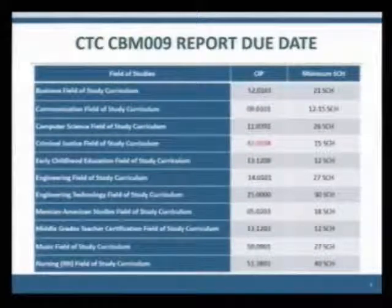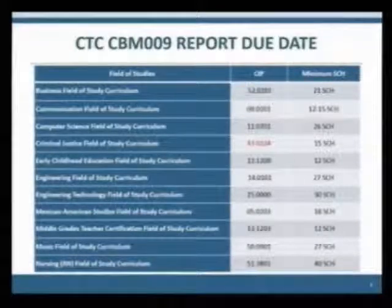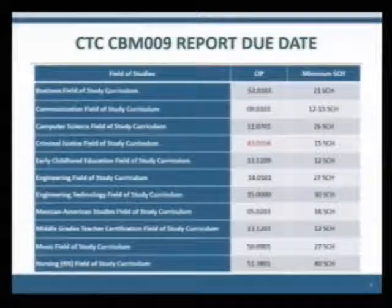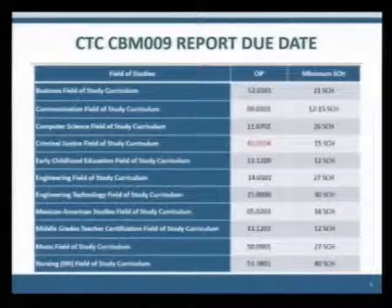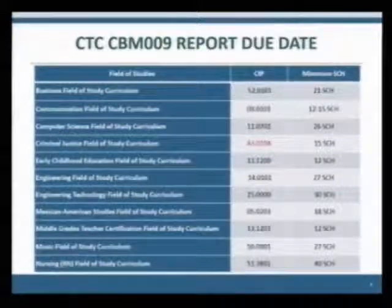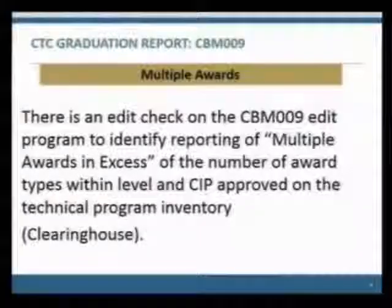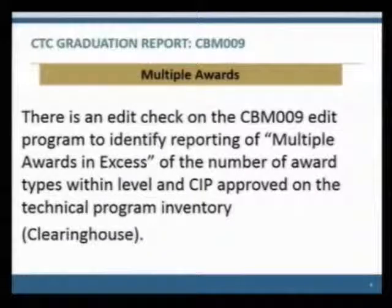Institutions participating in the Nursing Shortage Reduction Program must submit their nursing graduates by October 1st. The nursing graduates must be error-free to be included in the count for funding. The remainder of CBM-009 records may be included with the nursing graduates or submitted by October 15th. All graduates, including nursing graduates, must be on the final certified file. There are currently 11 approved fields of study with SIP codes and parameters, found on page 9.2 of the CBM manual. Last year, the criminal justice field of study SIP changed to 43-0-1-0-4. There is legislation focused on field of study, so we may see some expansion there.